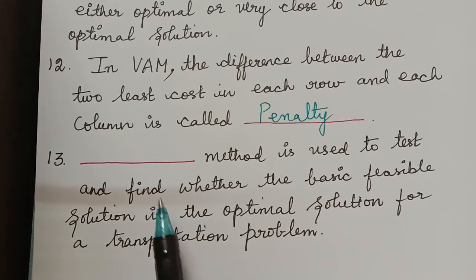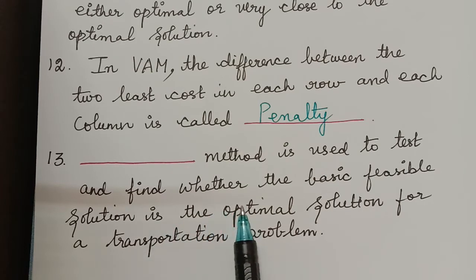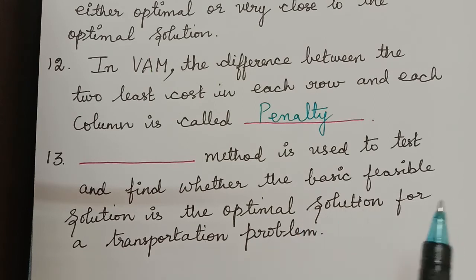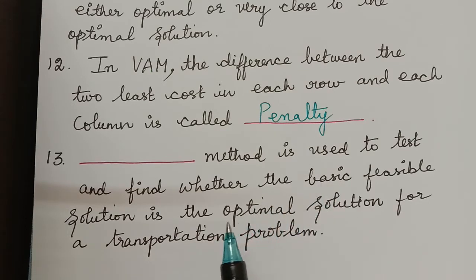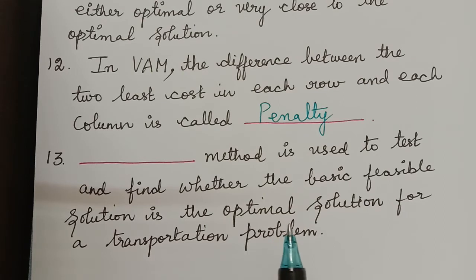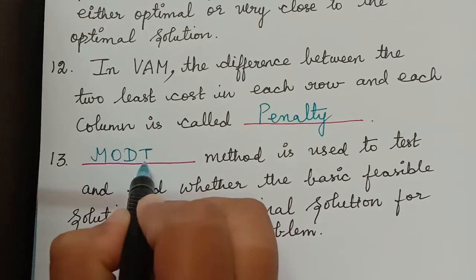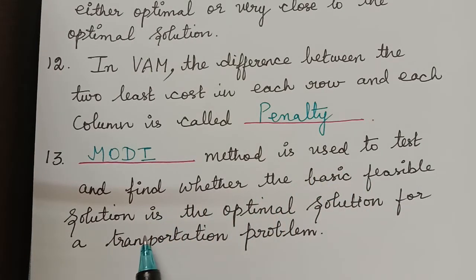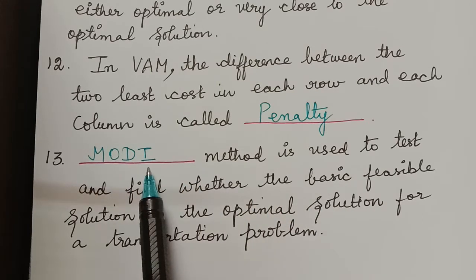The next question is: which method is used to test and find whether the basic feasible solution is the optimal solution for a given transportation problem? When we find the initial basic feasible solution, we check whether it is optimal or not. If it is optimal, we conclude that solution is the optimal solution. If not, we draw loops, find another solution, and make an optimality test for that solution. In general, all these methods are known as the MODI method, that is, the Modified Distribution Method.